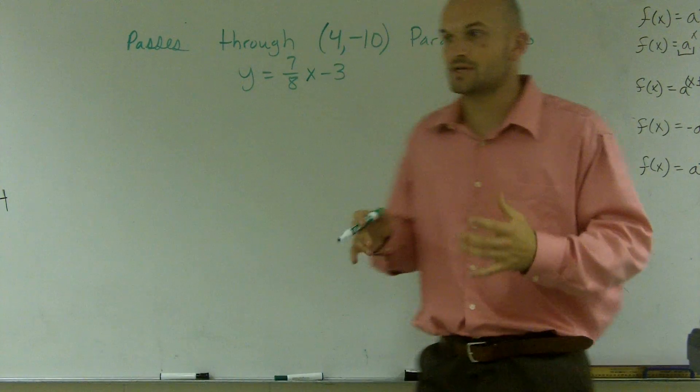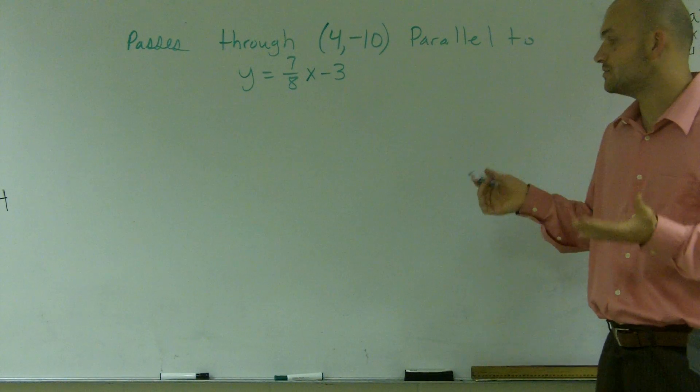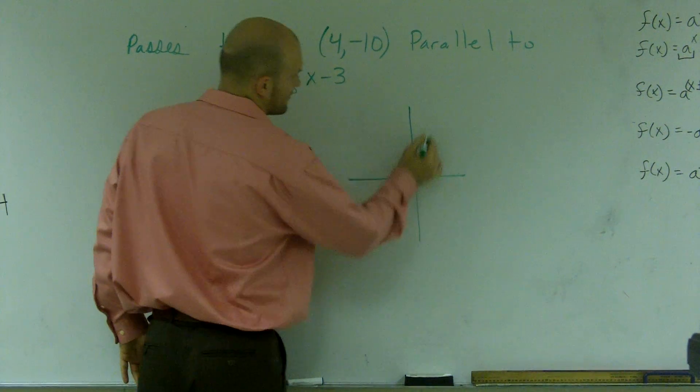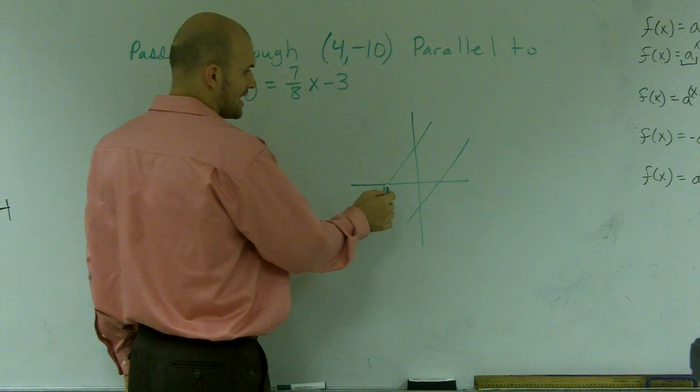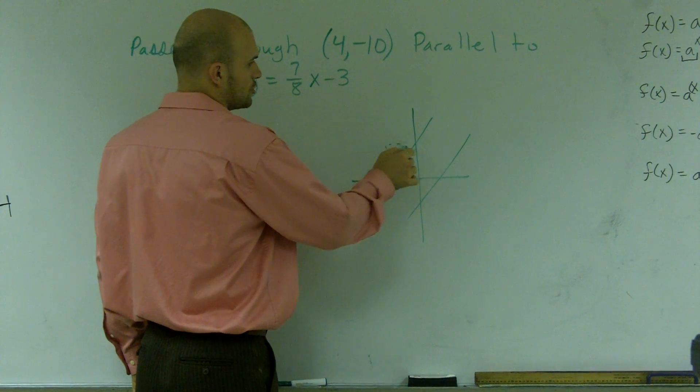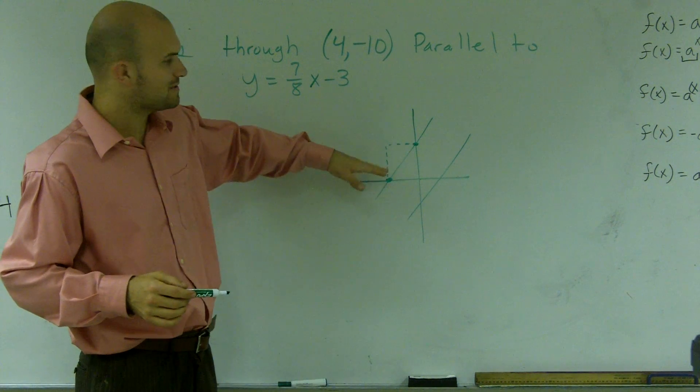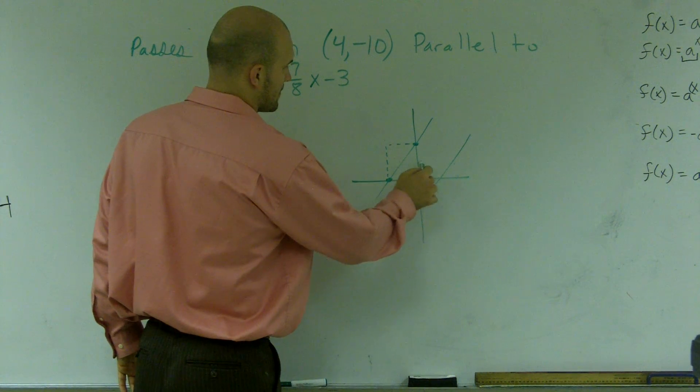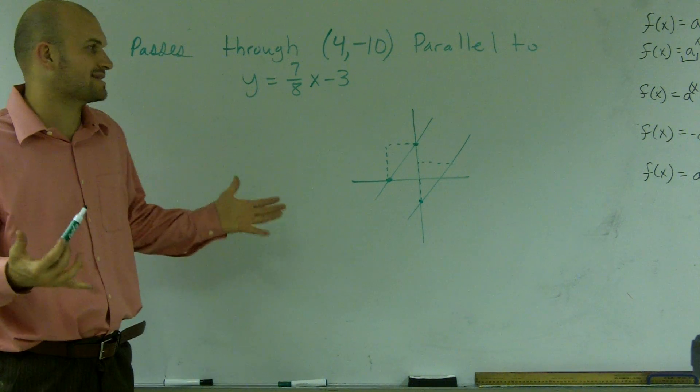So the first thing we're going to want to do is understand what exactly parallel lines are. Remember, parallel lines are two lines that are never going to touch. I'm just going to sketch parallel lines here. One thing you can look at with parallel lines is if I find what we call a slope triangle, which means the change between two points, the rise over the run, what you'll notice with parallel lines is that's going to be exactly the same. Therefore, they're going to have the exact same slope.